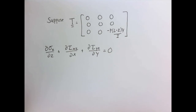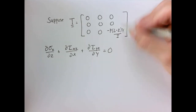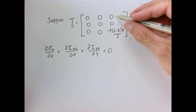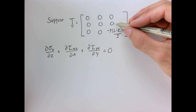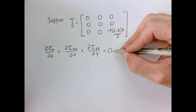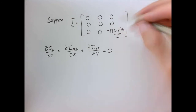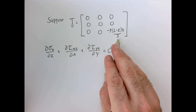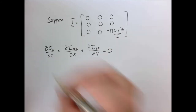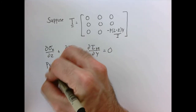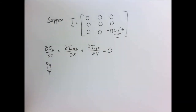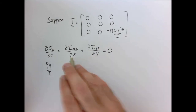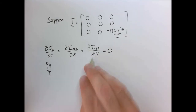The z equilibrium equation requires: ∂σ_zz/∂z + ∂τ_xz/∂x + ∂τ_yz/∂y = 0. The last two terms would be trivially zero, but the partial derivative of the normal stress with respect to z equals Py/I, which is not zero. So for equilibrium to hold, one or both of those shear stresses must not be zero.